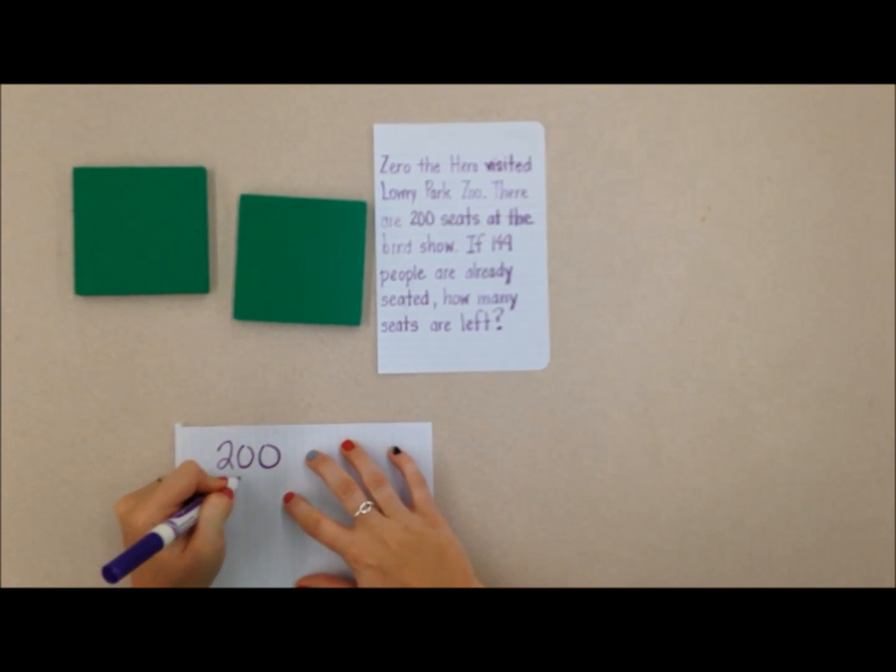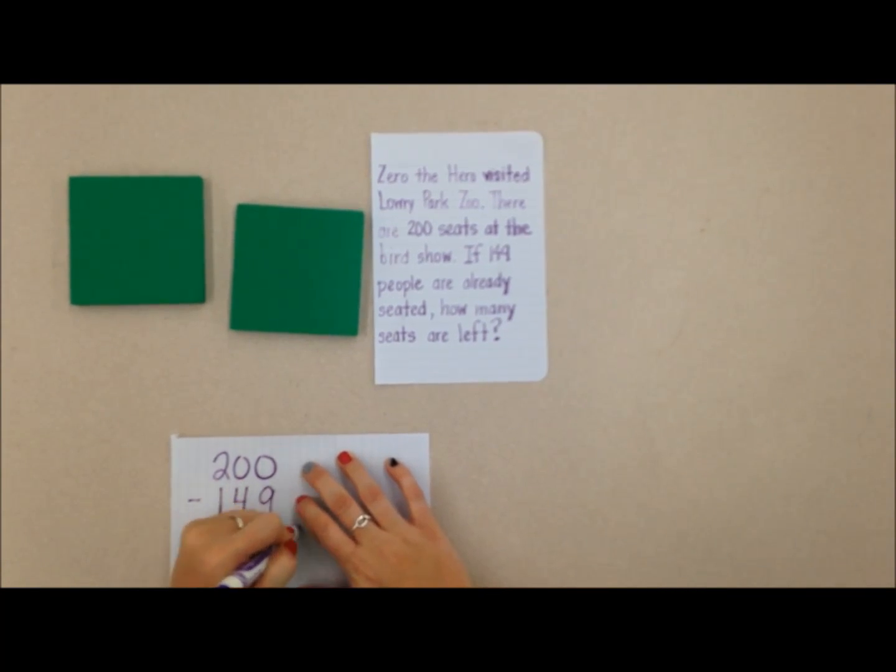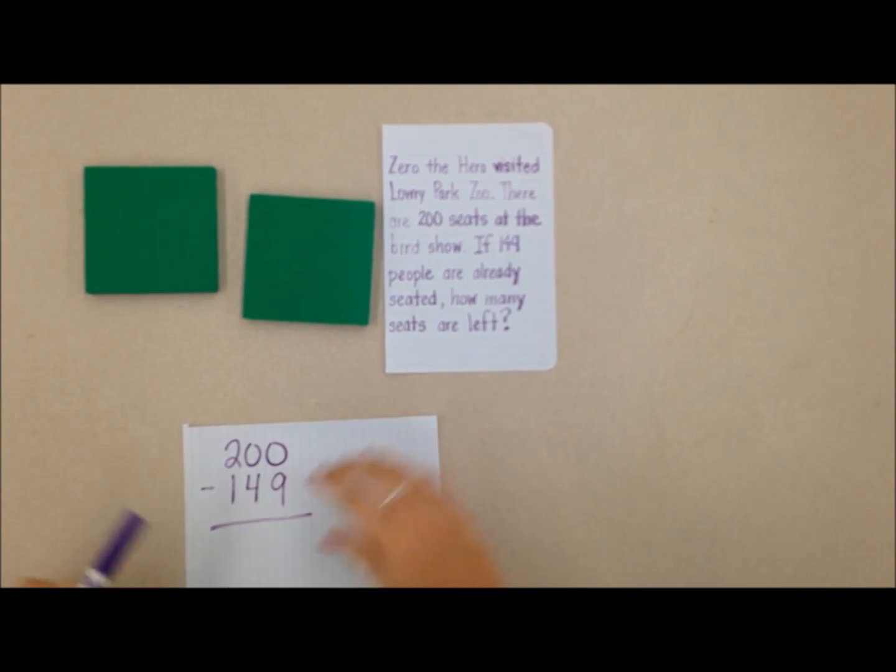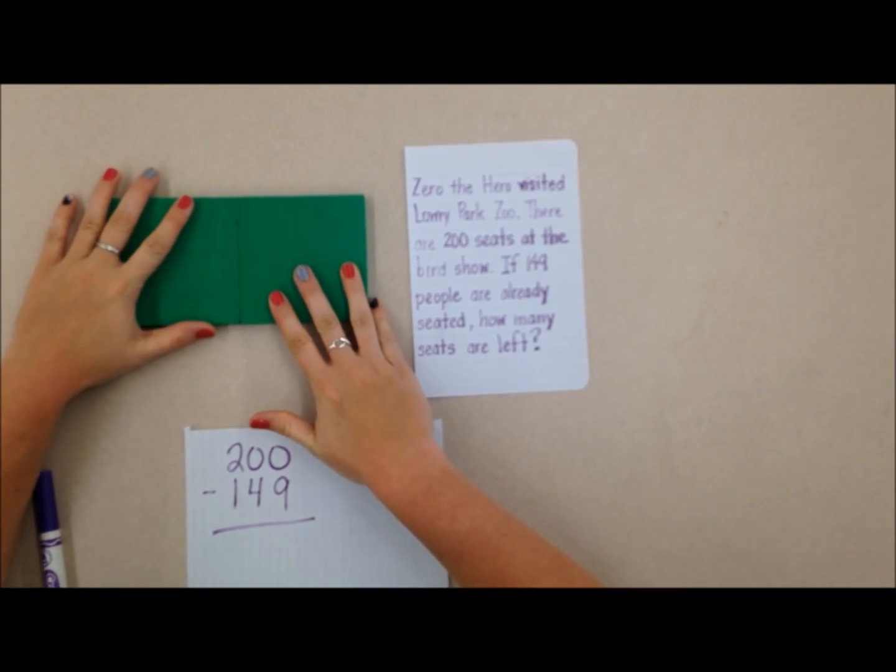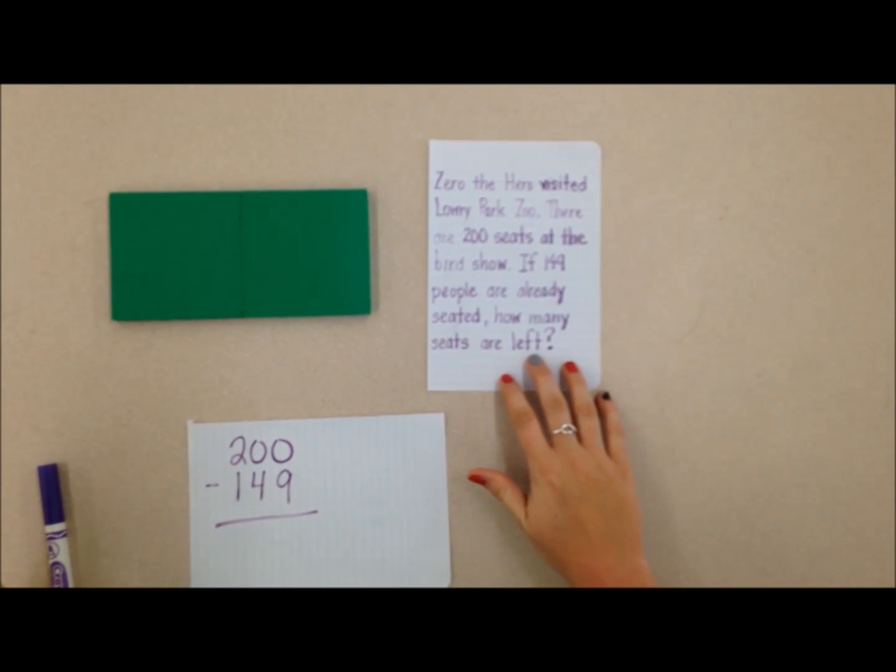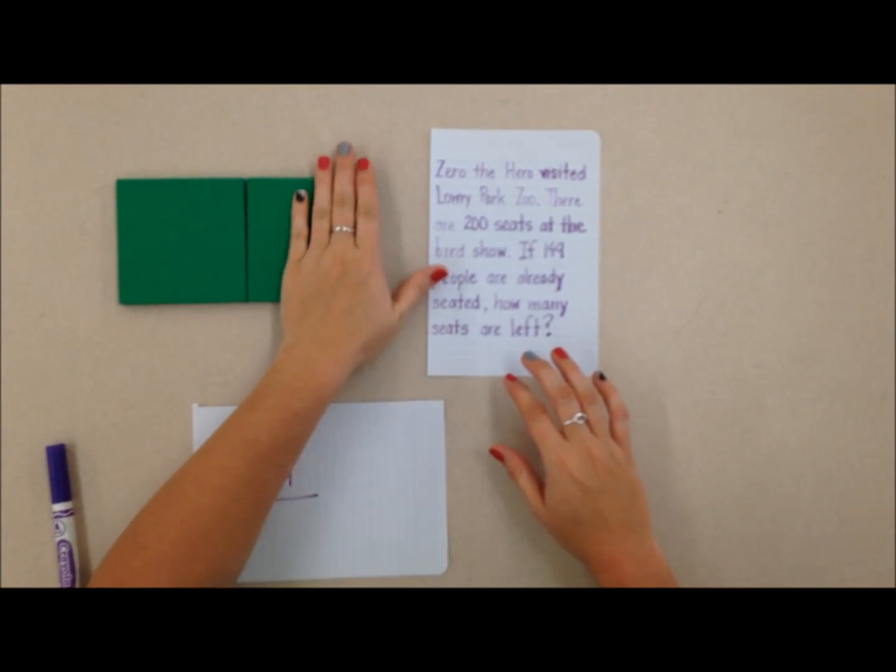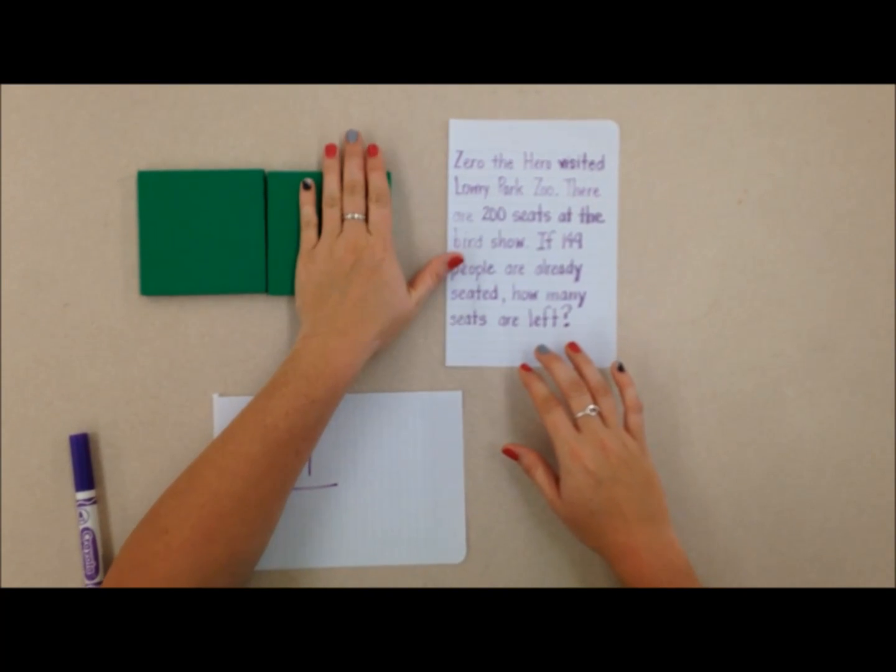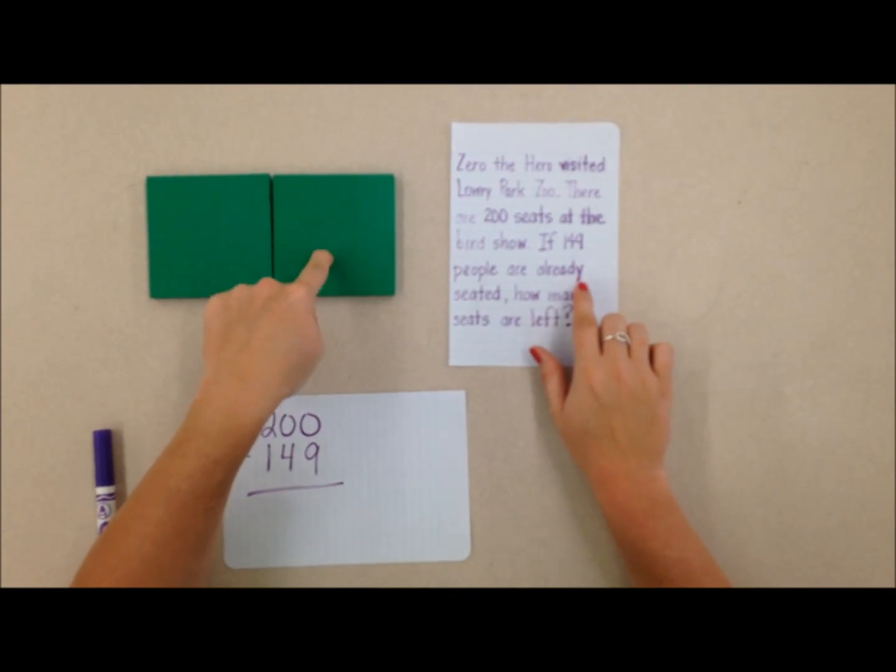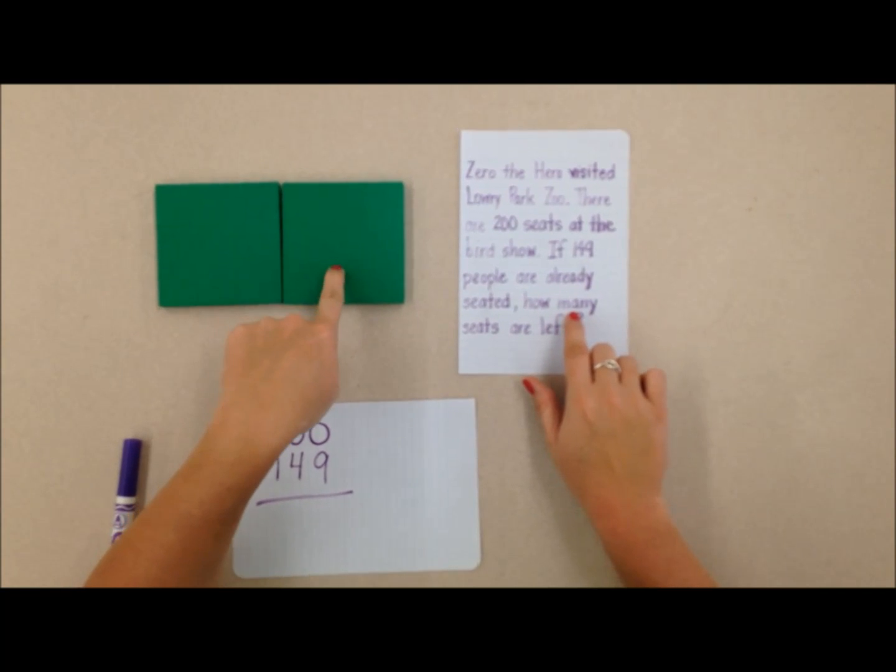So let's see, I have 200 and I want to subtract 149. Well, I don't have any ones right now to subtract, or tens, but I can do some trading. So I have a hundred here that I can trade out.